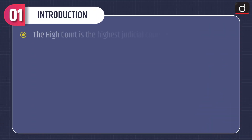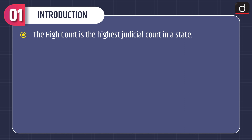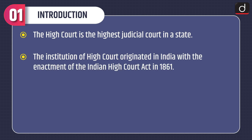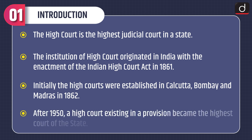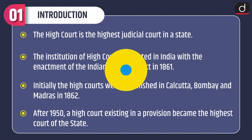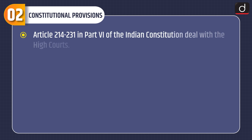Let's have a look at its brief introduction. The High Court is the highest judicial court in a state. The institution of High Court originated in India with the enactment of the Indian High Court Act in 1861. Initially, the High Courts were established in Calcutta, Bombay and Madras in 1862. After 1950, a High Court existing in a province became the highest court of the state.